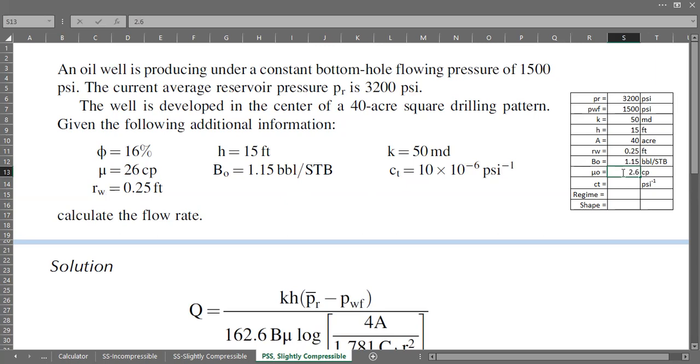And then total compressibility 10 multiplied by 10 to the power of minus 6, and it's equal with this one, 1 multiplied by 10 to the power of minus 5. And the flow regime, it's pseudo steady state flow PSS, and the shape is square but I want to calculate also if it is radial.